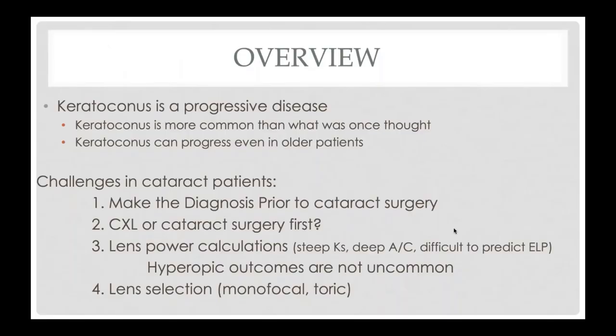Keratoconus is progressive. It's definitely more common than we once thought, and it can definitely progress in our older patients — those coming in who have cataracts and those that have had cataract surgery. Just when we identify a patient with keratoconus, we need to keep watching them, even if they're in their 70s or 80s, because they can progress. Just like we follow glaucoma patients, we have to keep following our keratoconus patients.